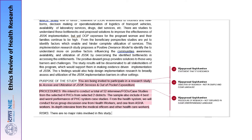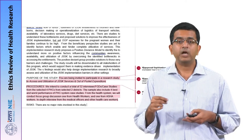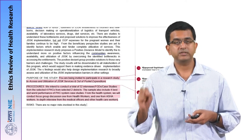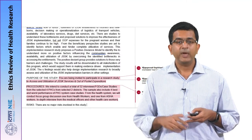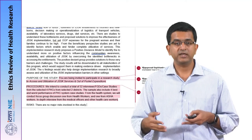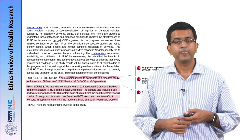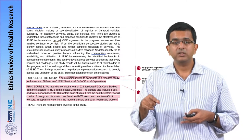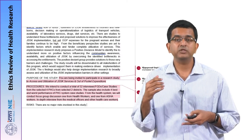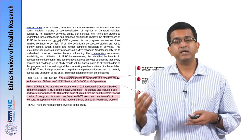The researcher states the purpose as assessing access and utilization of JSSK services and out-of-pocket expenditure. However, a lot of jargon has been used here — terms like 'access and utilization' and 'out-of-pocket expenditure' may not be comfortable to understand for a participant from a rural area in a remote district. This explanation of the purpose needs to be simplified and restated in a different manner.